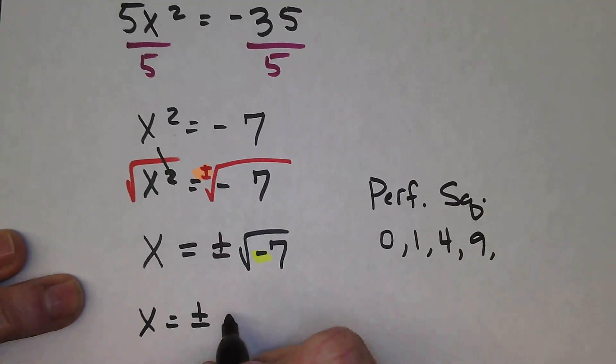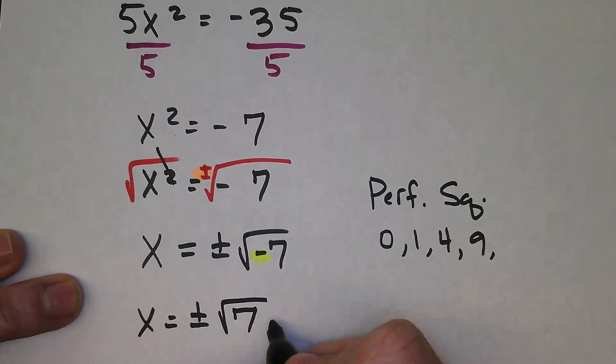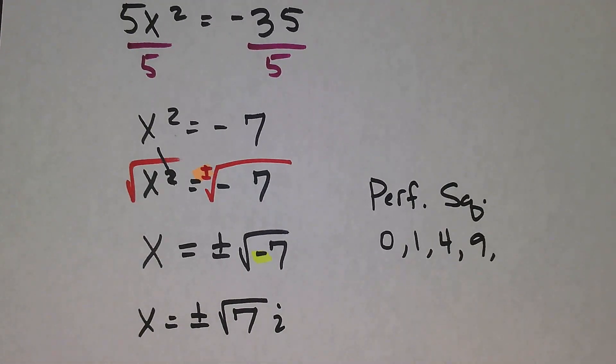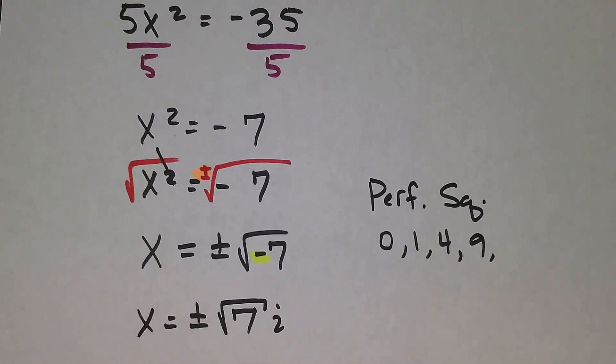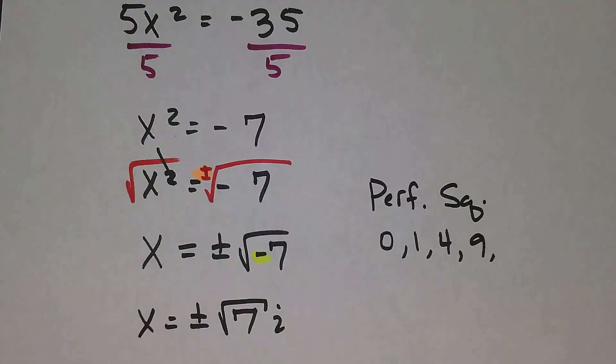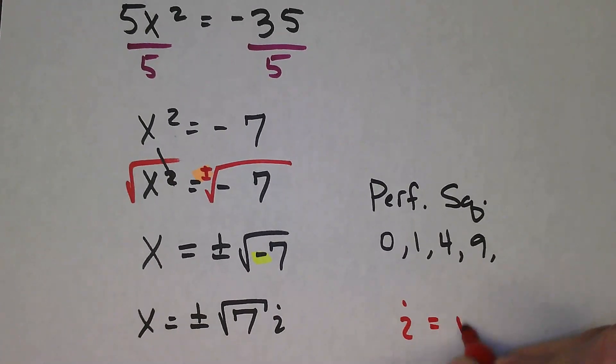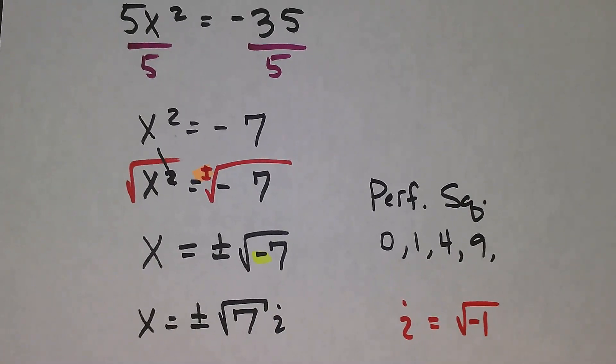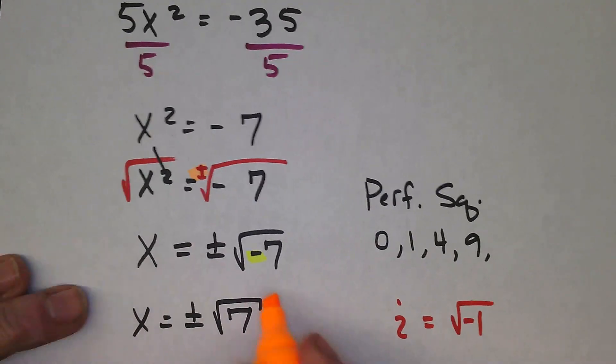So x = ±√7i. The i is not under the square root because it's replacing the square root of -1. It's accounting for a square root on its own, since i is the square root of -1. That's as far as I can go. That is my final answer.